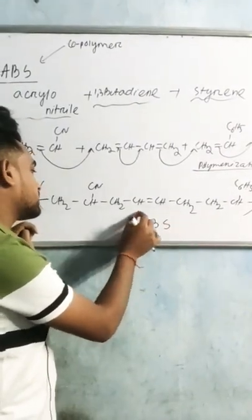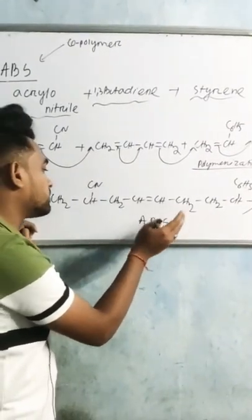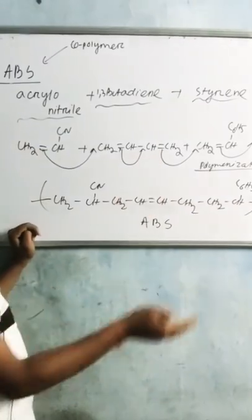Co-polymer me three different monomer units hote hain — example ABS, where B is 1,3-butadiene.